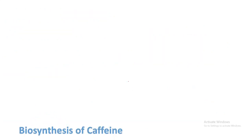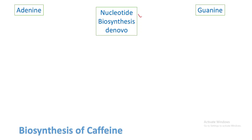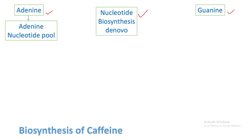Now let's study the biosynthesis of caffeine. Caffeine can be biosynthesized from adenine, from guanine, or from de novo nucleotide biosynthesis — these three can be the basic primary sources of raw material for caffeine biosynthesis in plants. First, starting with adenine: adenine goes into the adenine nucleotide pool, which contains adenosine monophosphate (AMP), adenosine diphosphate (ADP), adenosine triphosphate (ATP), and cyclic AMP. From here, AMP is the source for caffeine biosynthesis.